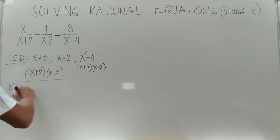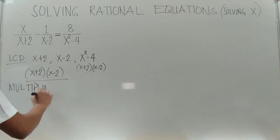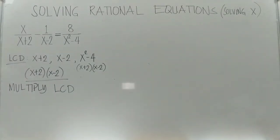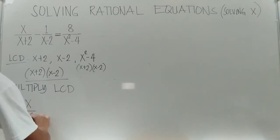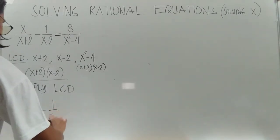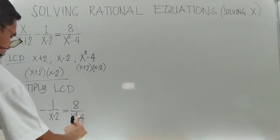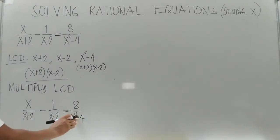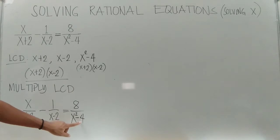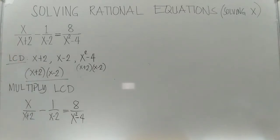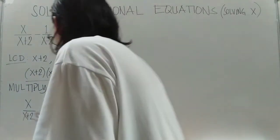Step number 2 is to multiply the LCD to the whole equation. Cross multiplication will not be applicable in this kind of rational equation. We will stick to the basic: identify your LCD, then multiply your LCD to your equation to eliminate your denominator. So let us multiply.